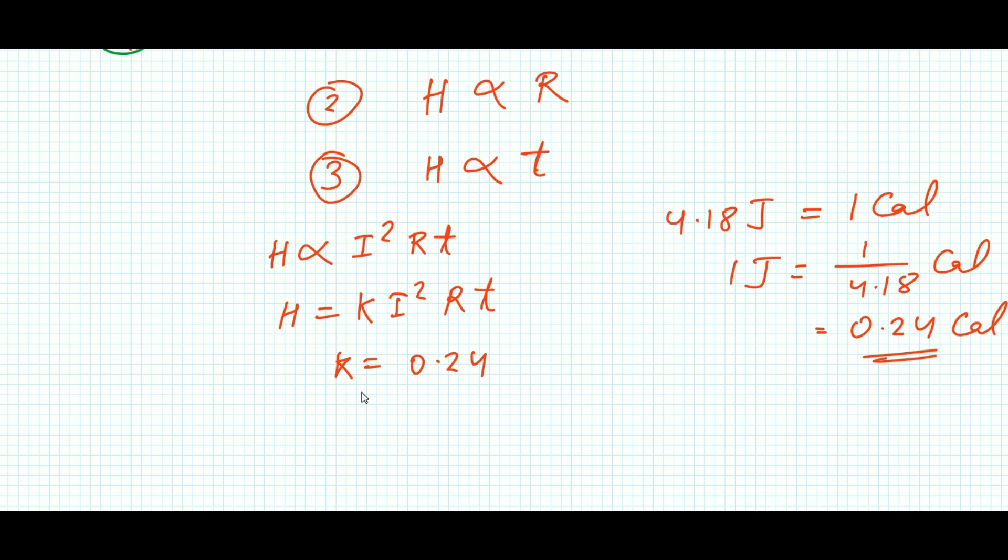Therefore, 1 Joule equals 1 by 4.18 calorie, which equals 0.24 calorie. So that constant we have converted into calorie. Because we can take K as 1, it becomes heat generated equals 0.24 I square RT, and this is the equation for heat generated inside a conductor.